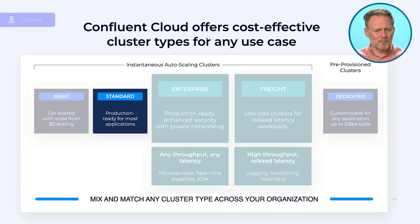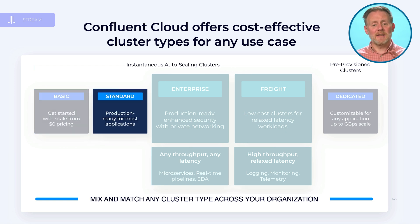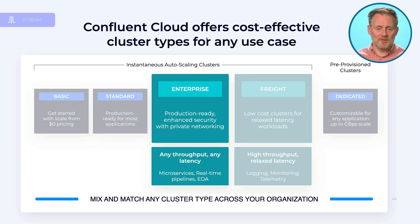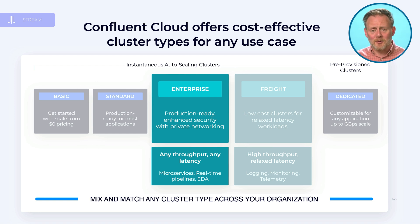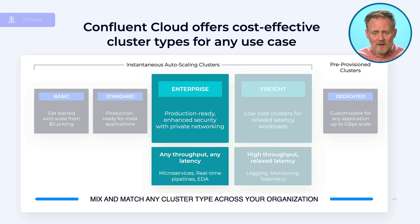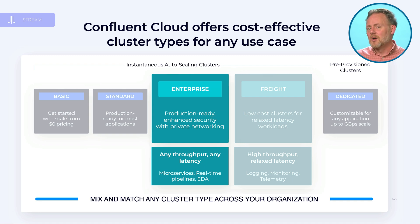Standard clusters are production-ready and good for most use cases. Then you've got enterprise clusters — those really scale to any throughput and low latency. These are fast clusters, and all of the enterprise security features are there.